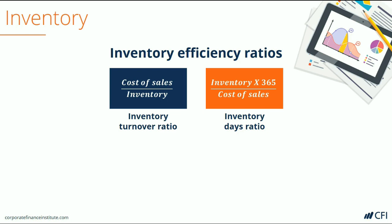The Inventory Days Ratio is interpreted in the opposite way as the Turnover Ratio, meaning that the lower the number is, the better. A low Inventory Days Ratio means there are fewer days that the company keeps its inventory on the balance sheet before selling it. For example, a figure of 10 would mean that the company on average sells all of its inventory within 10 days.